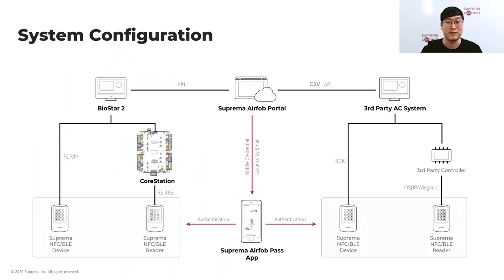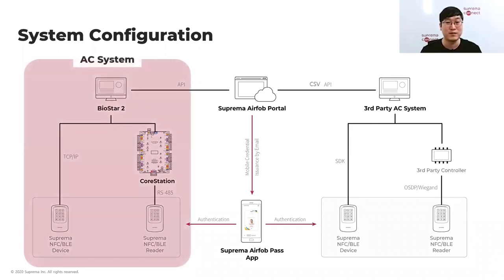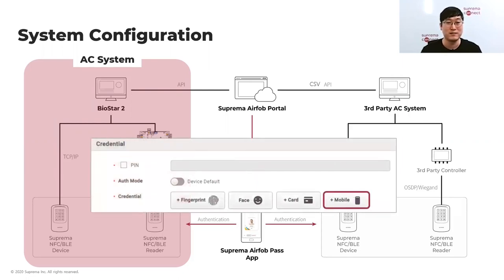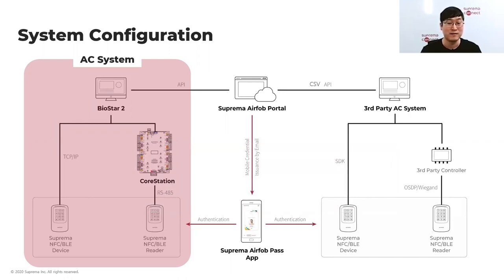The next topic is system structure. To use the Suprema mobile access system you need an access control system — either BioStar 2 or a third-party system. With BioStar 2, you need a BioStar 2 server and readers locally. BioStar 2 has been integrated with AirFob Portal via API, so with just a few clicks you can synchronize user information from BioStar 2 to the AirFob Portal and issue cards. Note that BioStar 2 must be connected to the internet since the portal is cloud-based.